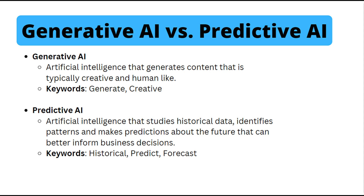There are a ton of definitions online for both generative AI and predictive AI, but in summary, generative AI is a type of artificial intelligence that generates content that is typically creative and human-like, whereas predictive AI is a type of artificial intelligence that studies historical data, identifies patterns, and makes predictions about the future.